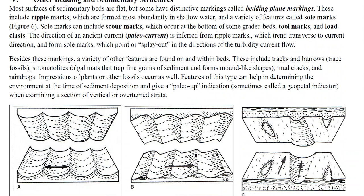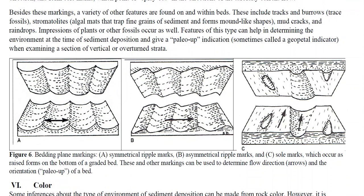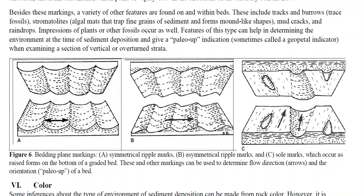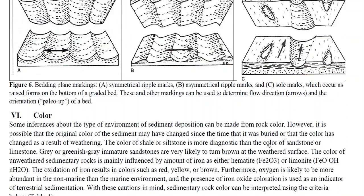For the next section on other bedding types, I talk about paleo current directions using tool marks and sole marks. We've already covered oscillating ripples and asymmetric directional ripples. Sole marks occur when a boulder or log flowing down a river channel hits the bottom, making a splay mark that opens in the direction of current flow. A good analogy: if a paint can falls off a truck, it splays out in the direction the truck was moving. So the traffic moving toward us shows us the direction of current flow — that's what we mean by sole marks or tool marks.